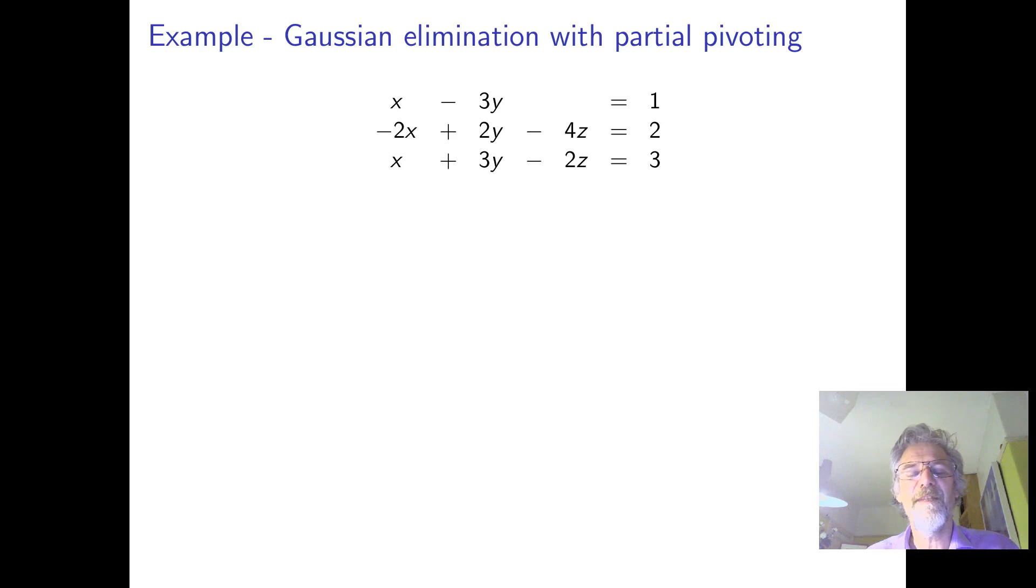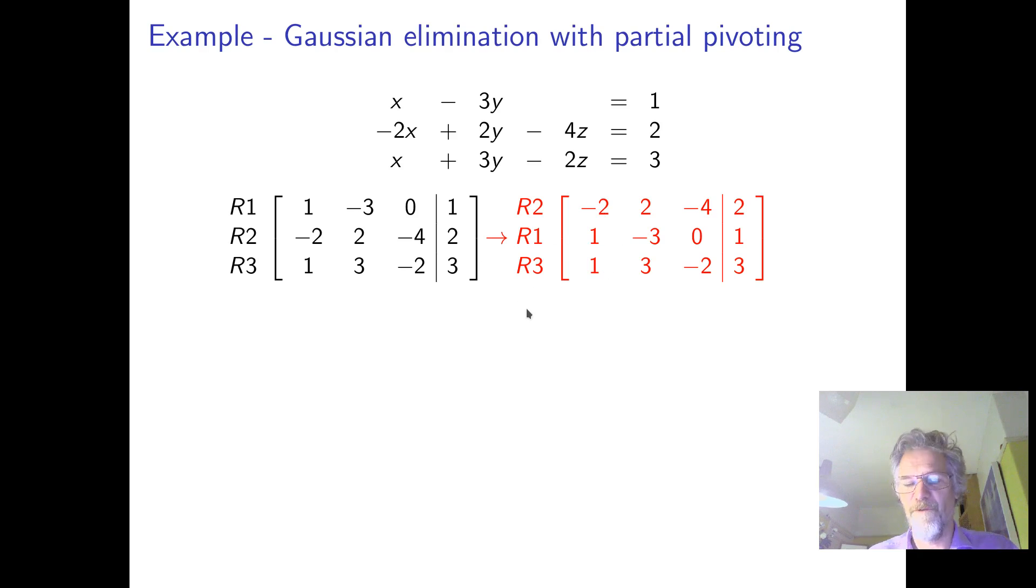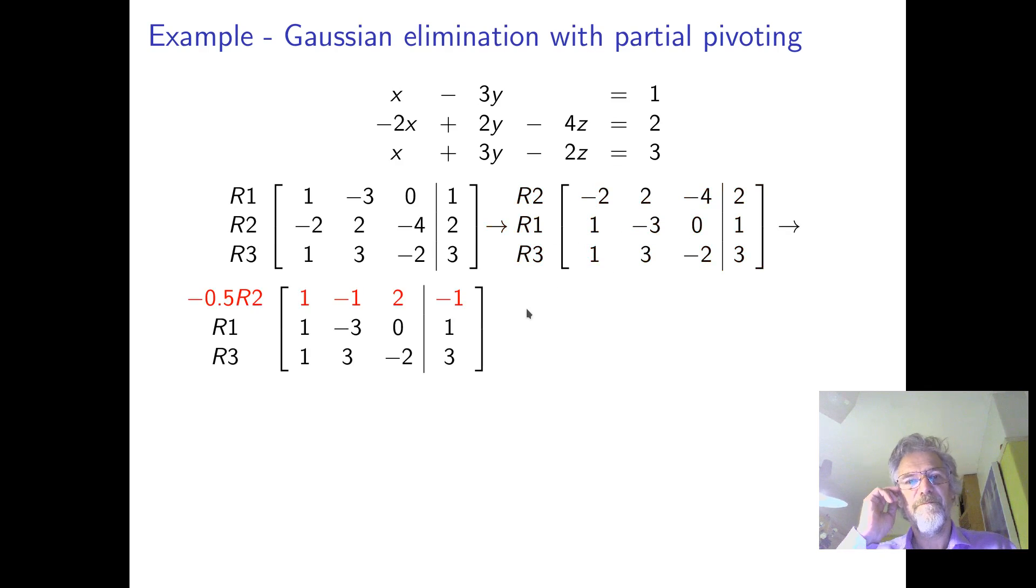So here's a system of equations, written as fully as equations, we would take the augmented matrix, these are just the labels of the rows. But you should say which operations you're doing. And what we do is we look down for the biggest number in absolute value, and that's minus two, because we don't care about the minus. And we swap that one up to the top. So we've exchanged row one and row two.